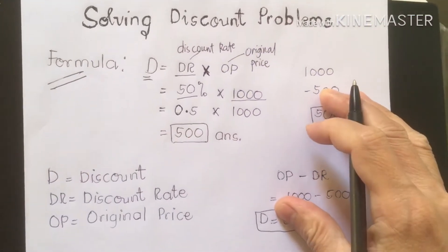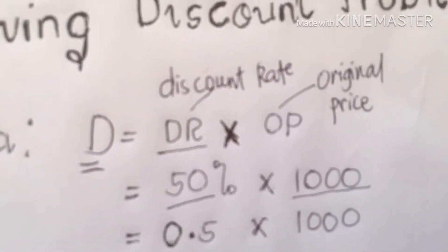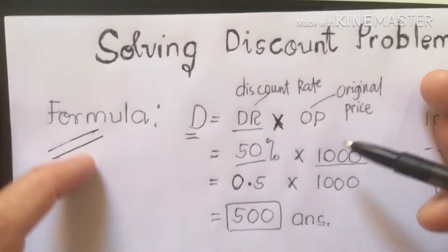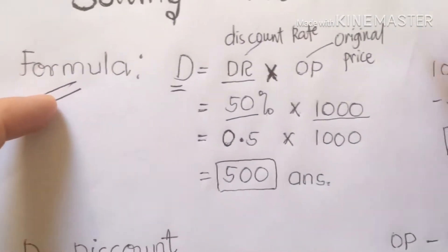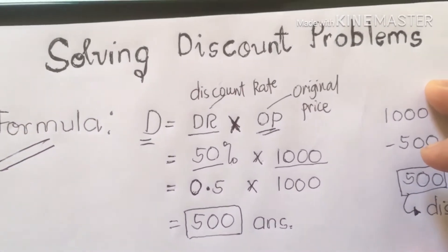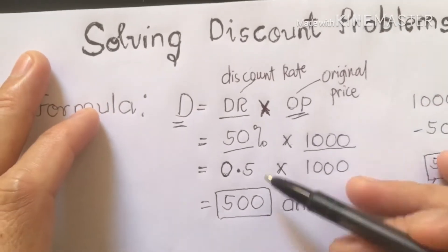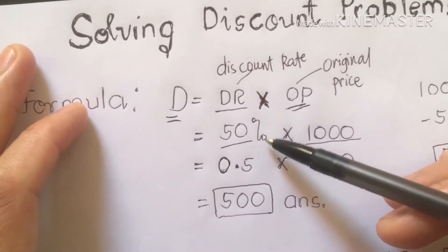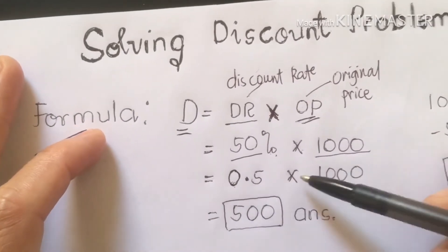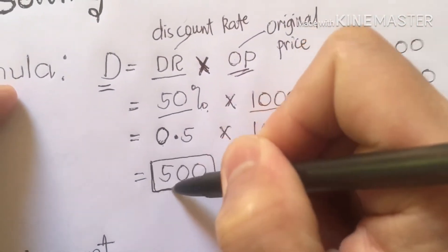For example, the discount rate, you are going to multiply by the original price. So for example, 50% times 1,000 — the original price of that particular product is 1,000, then less 50%. We are going to convert the percent into decimal form first. So 0.5 times 1,000. Our answer is 500.